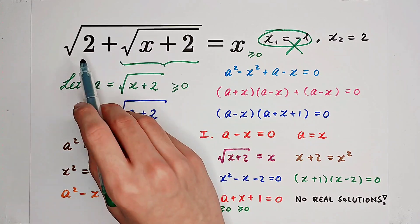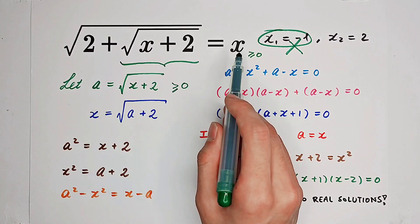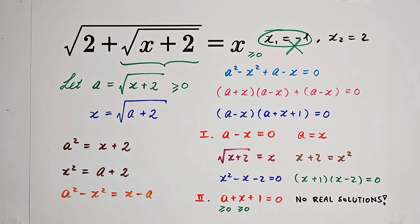2 plus 2 is 4, square root of 4 is 2, 2 plus 2 is 4, square root of 4 is 2. Yes, it is indeed a solution. Did you get it? Give me a thumbs up. Subscribe to me for more wonderful questions and we'll see you next time. Bye bye.